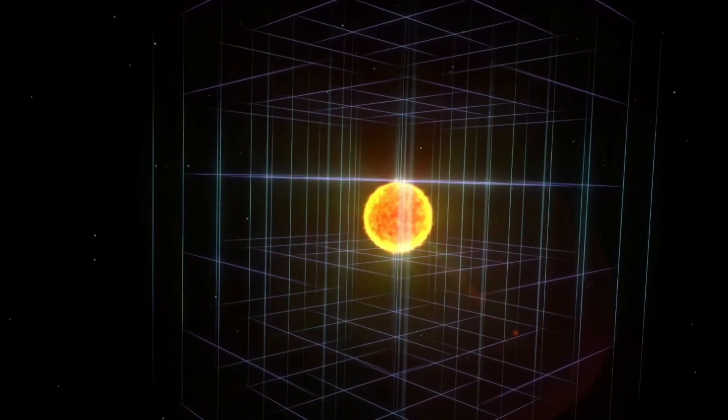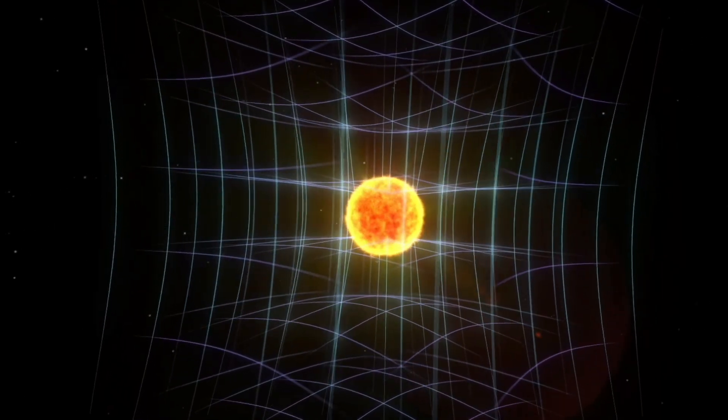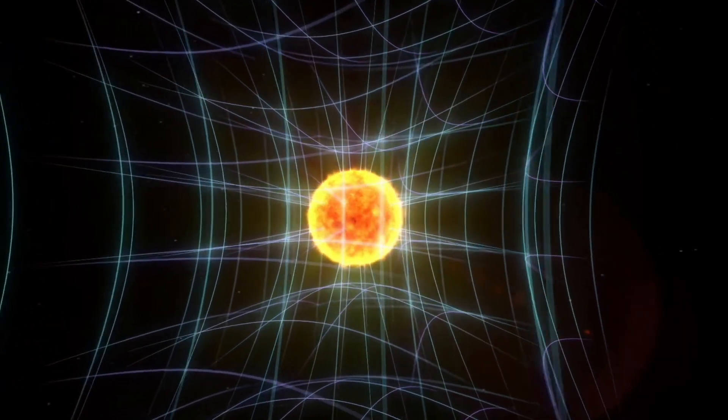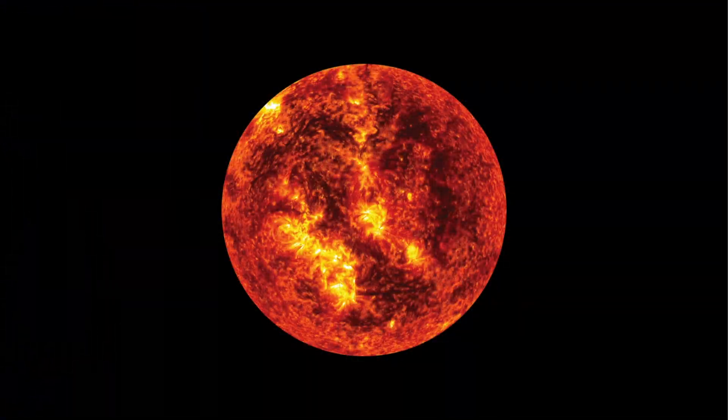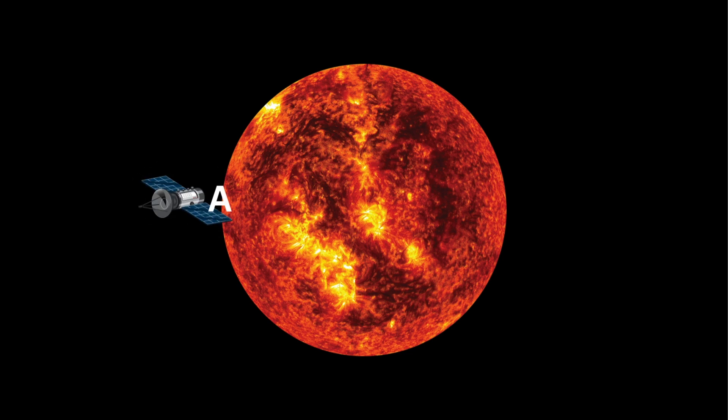On a two-dimensional plane, imagine this: the Parker Solar Probe is located at point A. The Soho spacecraft is directly across from it at point B. Both are positioned right next to the sun. The sun's diameter is about 1.4 million kilometers.